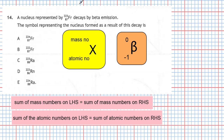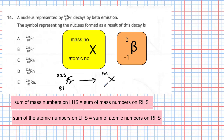Let's write out the nuclear equation. We have 223 francium with atomic number 87, and it's going to decay into an element with a mass number and an atomic number. It has given off a beta particle, and the beta particle is represented as minus one and zero.